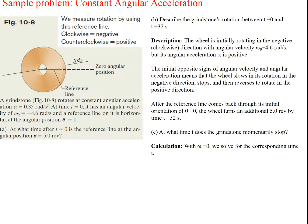Let's do an example problem. We measure rotation using a reference line. A negative rotation is clockwise, and counterclockwise rotation is positive. The grindstone rotates at a constant angular acceleration of alpha = 0.35 rad/s². At time t = 0, it has an angular velocity of omega₀ = −4.6 rad/s, and a reference line on it is horizontal at angular position theta = 0.